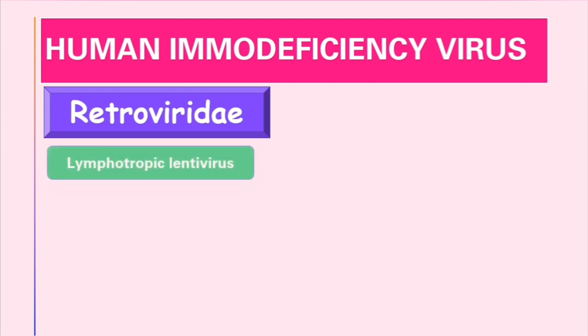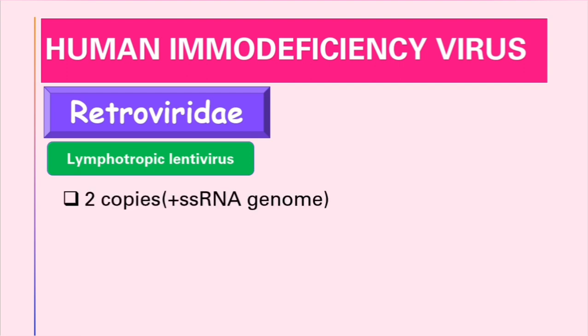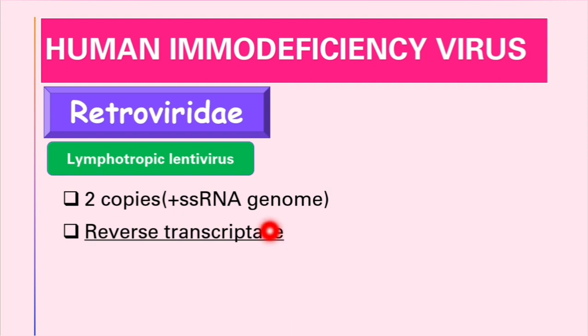This virus belongs to the Retroviridae family, specifically in the lymphotropic lentivirus group. The HIV virus contains two copies of positive-sense single-stranded RNA genome. It is a reverse transcriptase virus, so this enzyme called reverse transcriptase is responsible for reversing the process of transcription, thus synthesizing DNA from RNA.